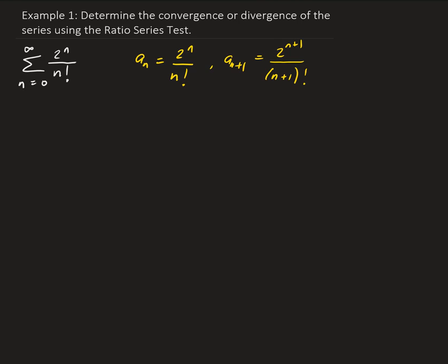By the way, if we have factorial in the series, the ratio series test is a good test to use. If you see something with factorial in the series, that's a good indication to use the ratio series test — that would be the first test I would use. So let's go ahead and take the limit of the (n+1)th term over the nth term.